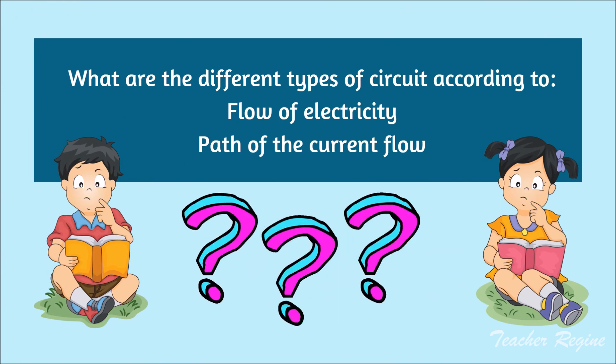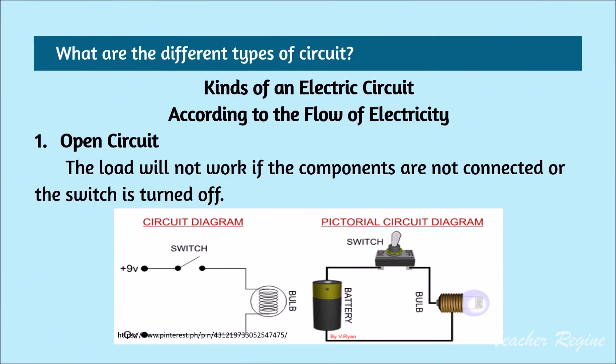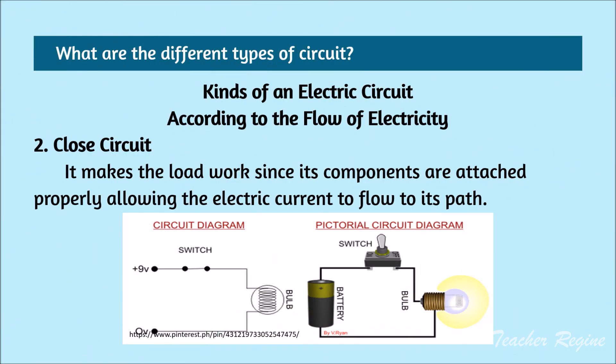What are the different types of circuit according to the flow of electricity? Kinds of an electric circuit according to the flow of electricity. Number 1: Open circuit — the load will not work if the components are not connected or the switch is turned off. Number 2: Closed circuit — it makes the load work since its components are attached properly, allowing the electric current to flow to its path.